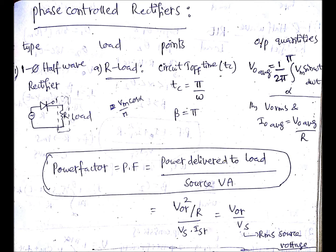If you observe the waveforms for this type with R-load, omega TC will be π, meaning for 180 degrees of time reverse bias voltage will be applied. So TC will be π by omega. Similarly, beta is the extinction angle, which is also π, that is 180 degrees.